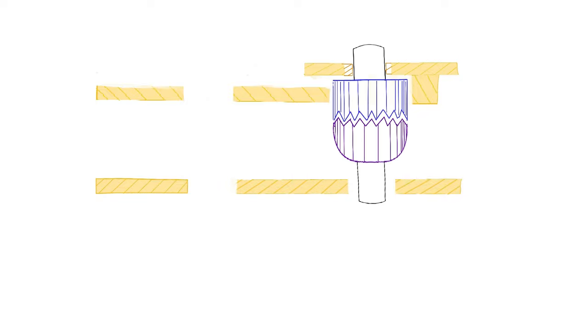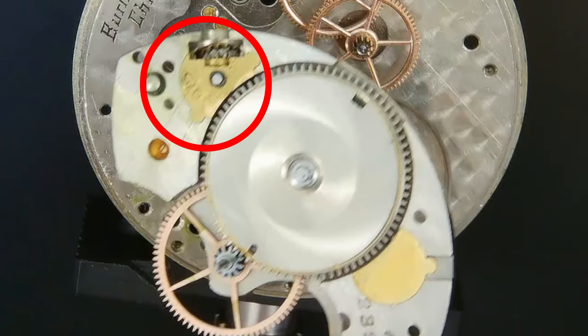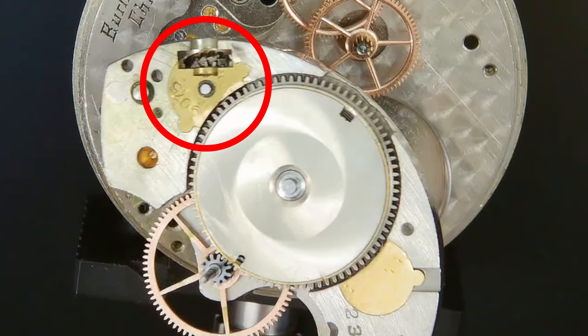And using a domed punch against the flat stump, we can compress the edges of the bushing, resulting in a snug fit around the intermediate winding wheels arbor. But the problem is the bushing is covered by this brass plate. So we'll need to find a way to remove the plate.